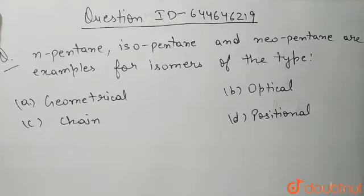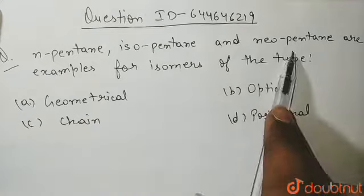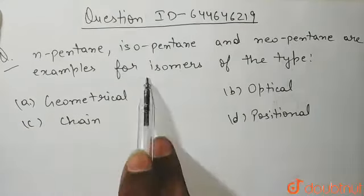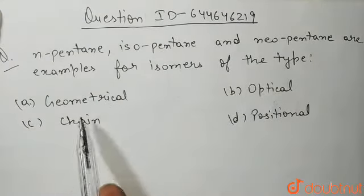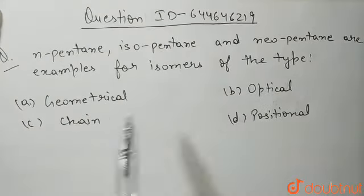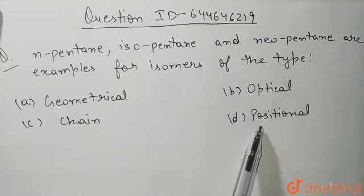Hello students. The question is: N-pentane, isopentane and neopentane are examples of isomers of the type — and your options are: geometrical, optical, chain, and positional.